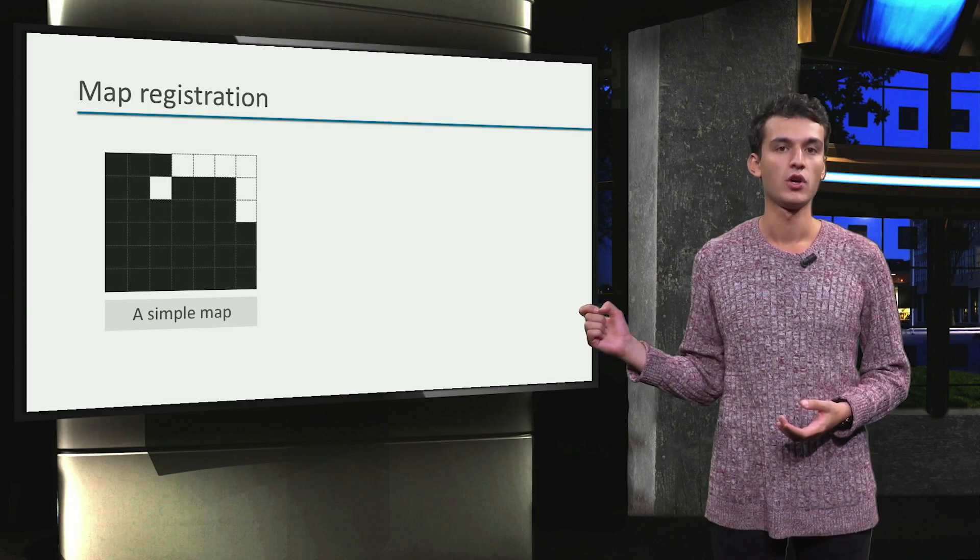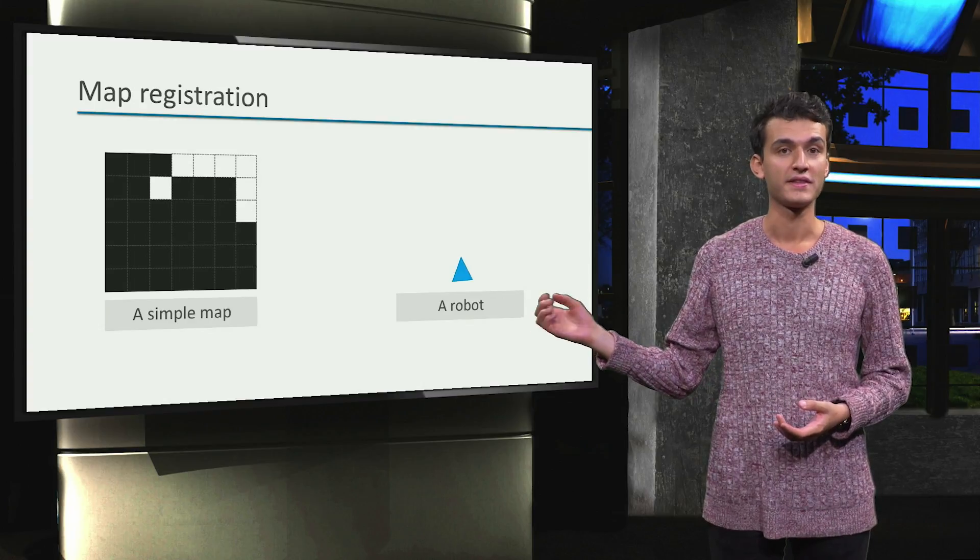Right here we have a simple map. We also have our robot that needs to localize itself.